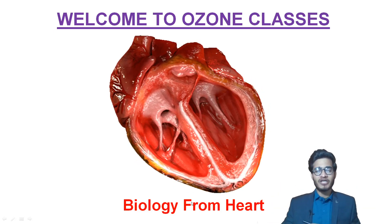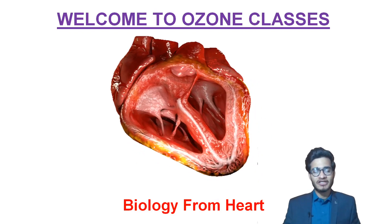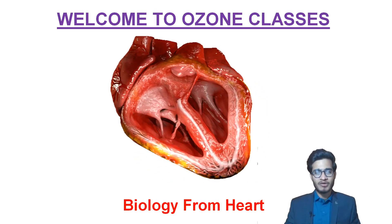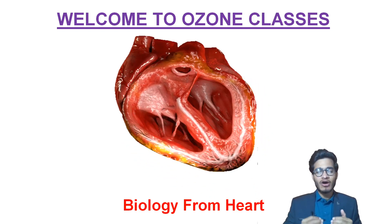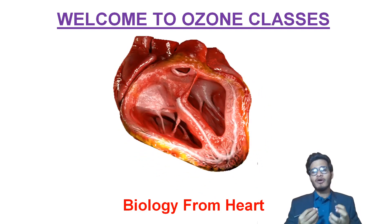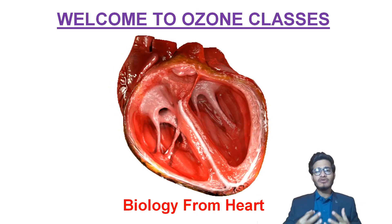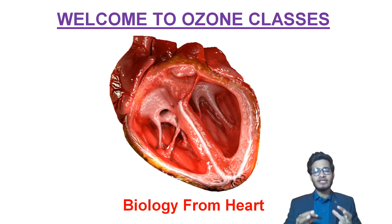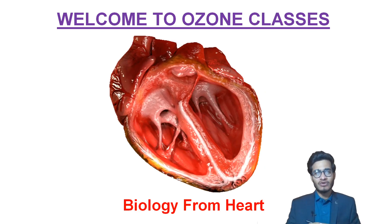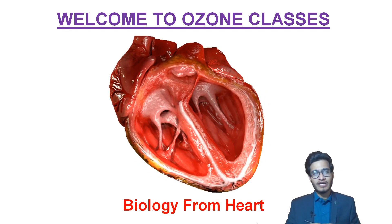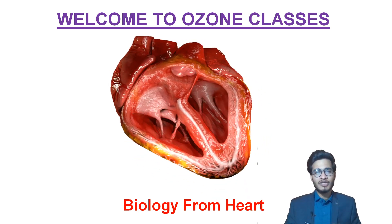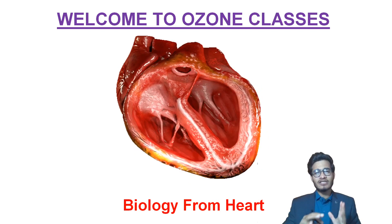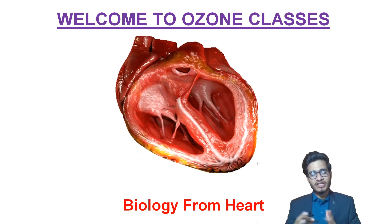Hey guys, welcome back to another very important video session from Ozone Classes. I am your dear friend Weapon Kumar Sharma. In this video we will be talking about a trick to understand the naming and numbering of nitrogenous base rings. We have read about purines and pyrimidines, and seen important characters — which positions are present in nitrogen, and which specific positions form the N-glycosidic linkage with sugar. This lecture is totally dedicated to their characteristic features as well as their numbering.